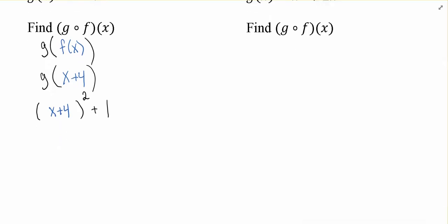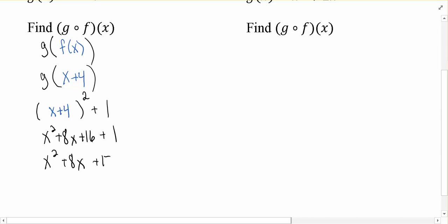So now it's just a matter of simplifying this algebraic expression. That's going to give us x squared plus 8x plus 16 plus our 1. And then we'll combine like terms. And that's the expression that we get for g of f of x.